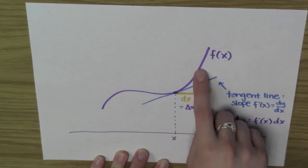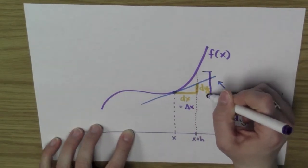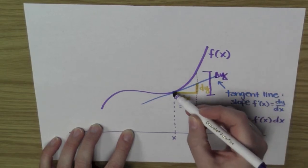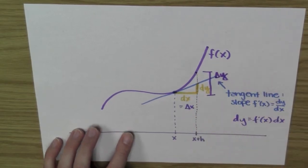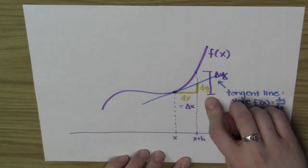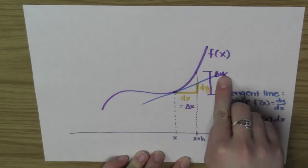So it doesn't actually give me the change in y, right? The change in y is here from where the function's value was to where the function's value is now. But it approximates the change in y as long as the function is nice enough, I'm zoomed in close enough, and the function looks enough like a line.